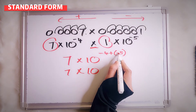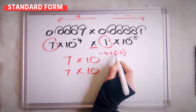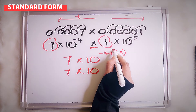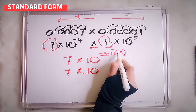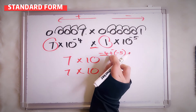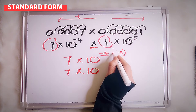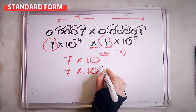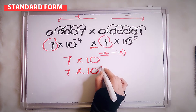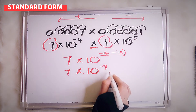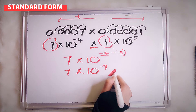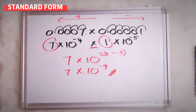Negative positive — so here it is minus. Negative 4 plus negative 5, that means it's negative 9. So the answer is 7 times 10 to the power of negative 9.